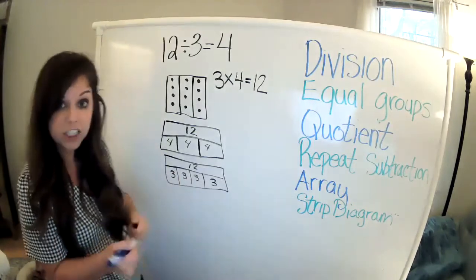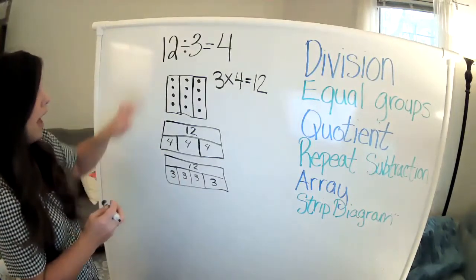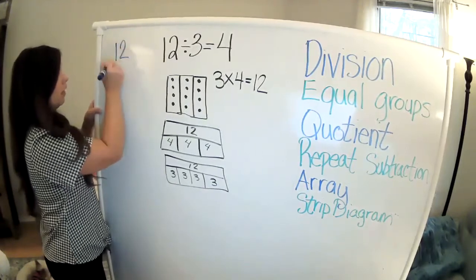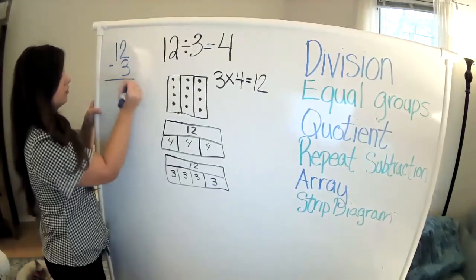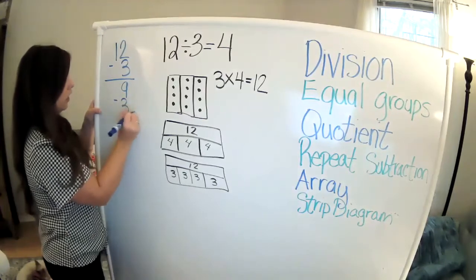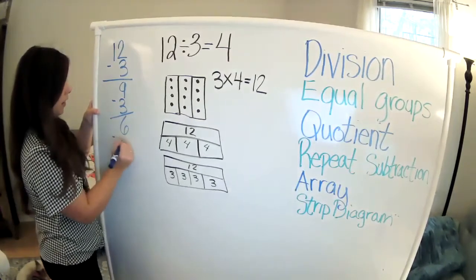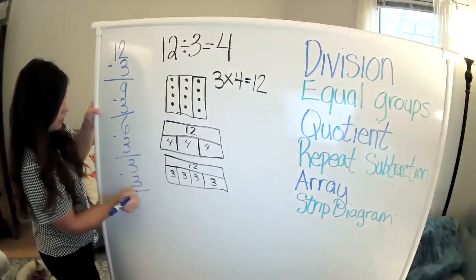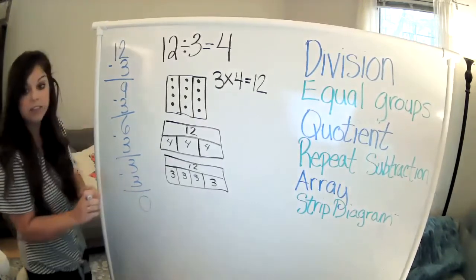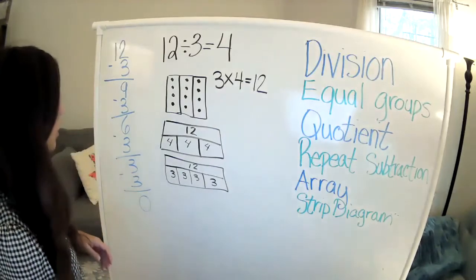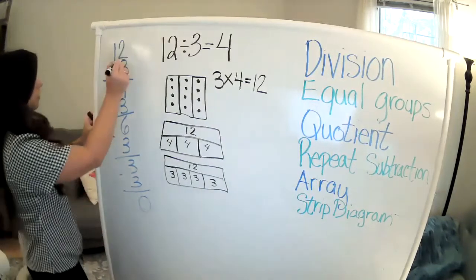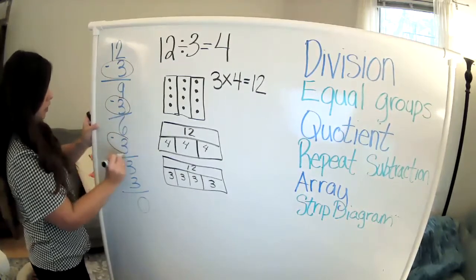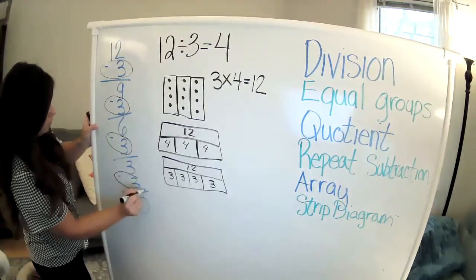You could even do a repeated subtraction equation. So I could do 12 minus 3 is 9, minus 3 is 6, minus 3 is 3, minus 3 is 0. And then I count how many times I had to take away 3. 1 times, 2 times, 3 times, 4 times.